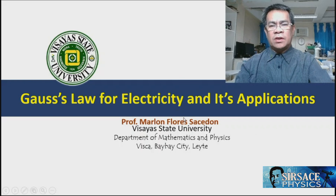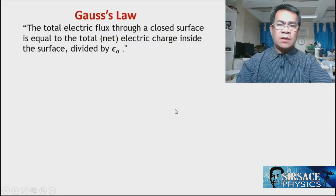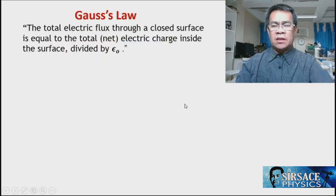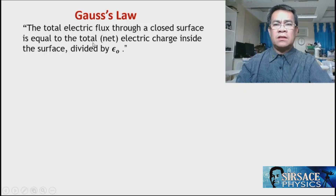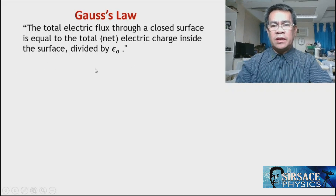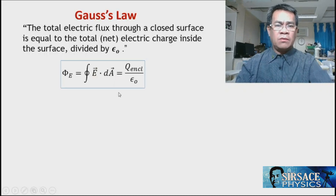Our topic is Gauss's Law for electricity and its application. Gauss's Law states that the total electric flux through a closed surface is equal to the net total electric charge inside the surface divided by the permittivity of a vacuum. Mathematically,